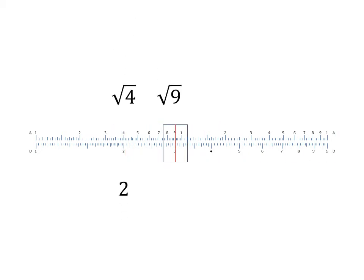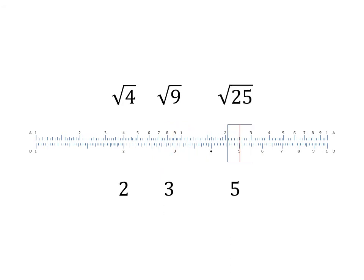The numbers on the A scale represent one half of the logarithm of each number, giving you an easy way to calculate squares and square roots. Reading from the A scale to the D scale is like taking the square root; reading from the D scale to the A scale is like raising to the power of 2. The K scale works exactly the same way, but for doing cubes and cube roots.